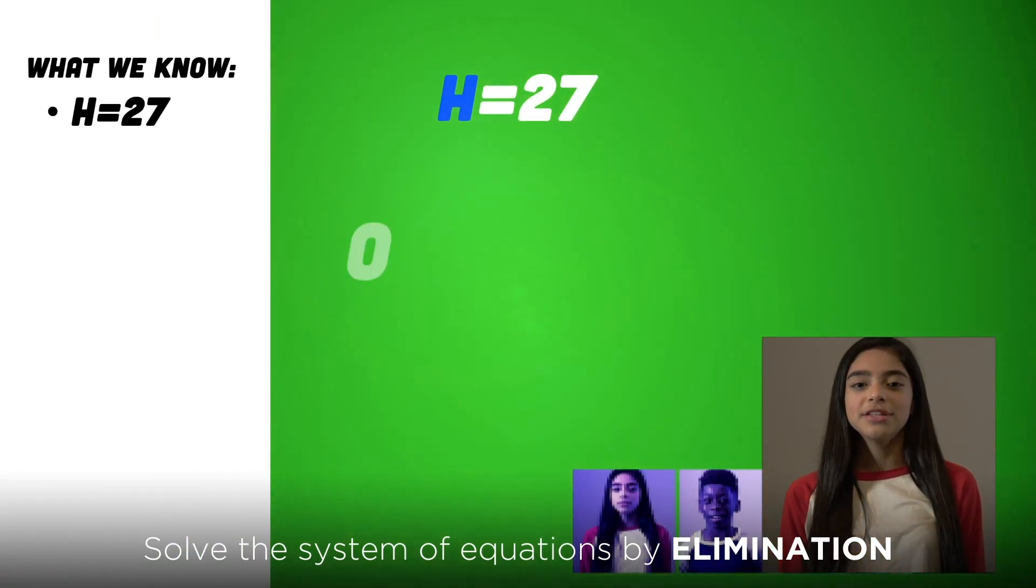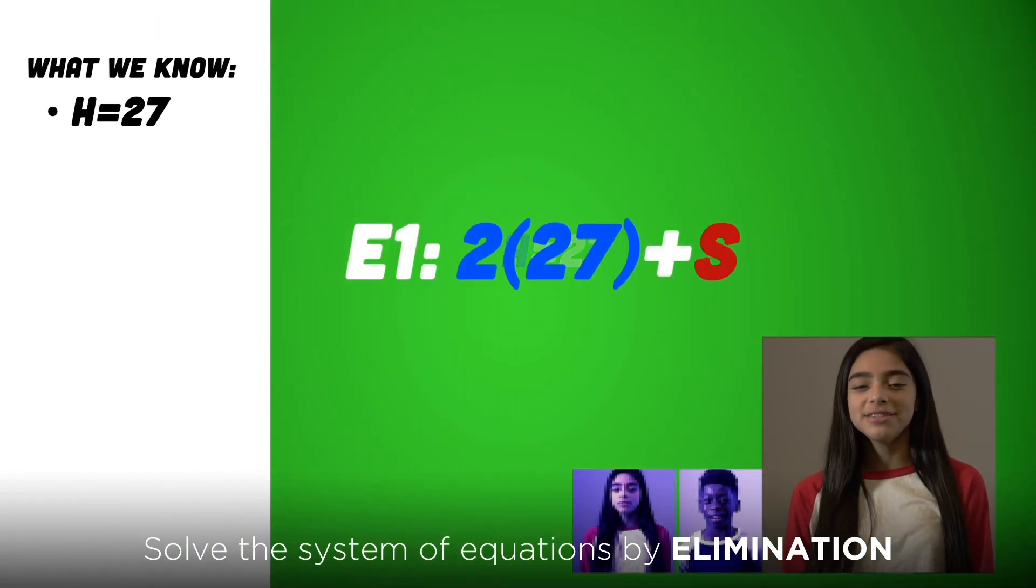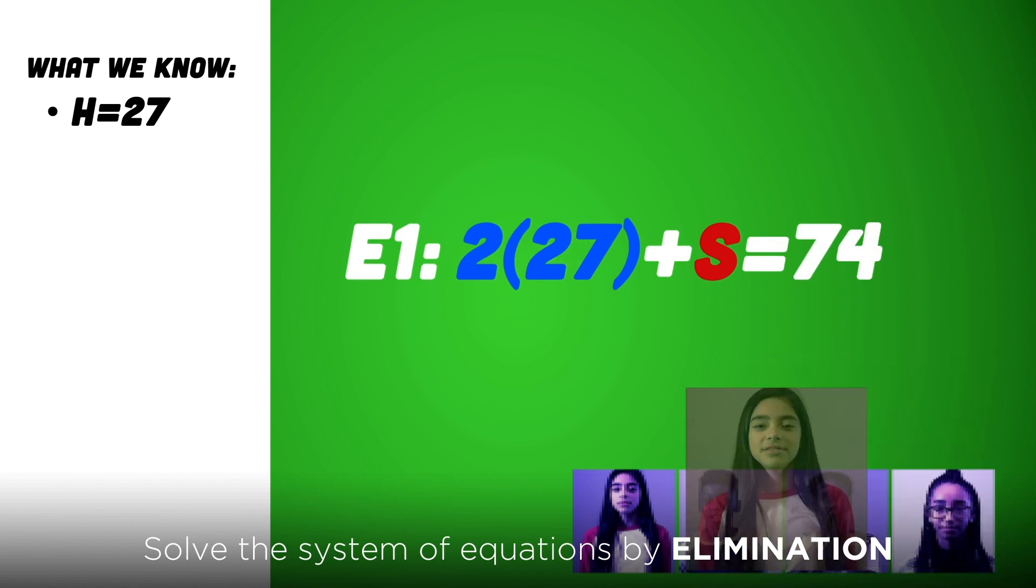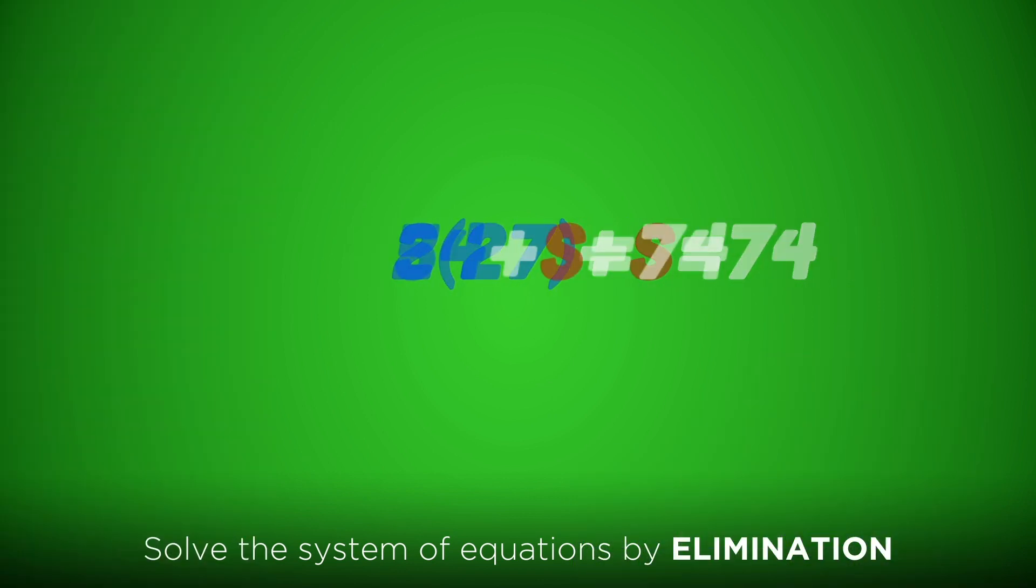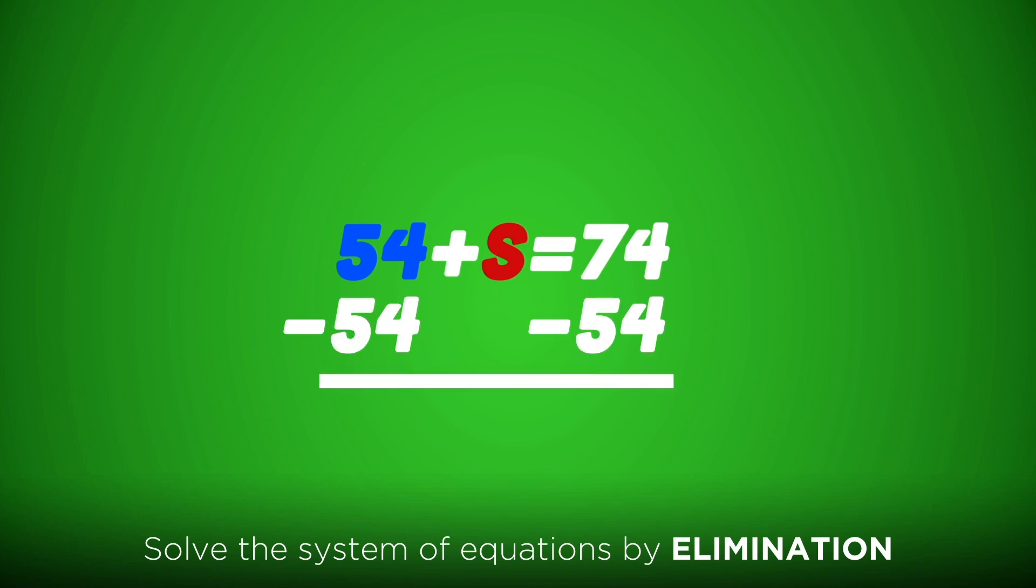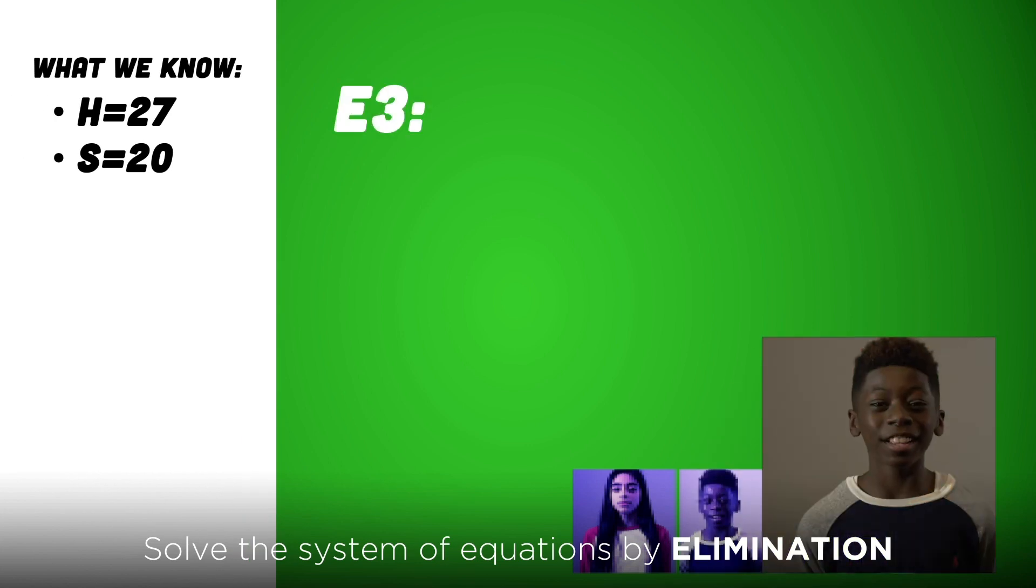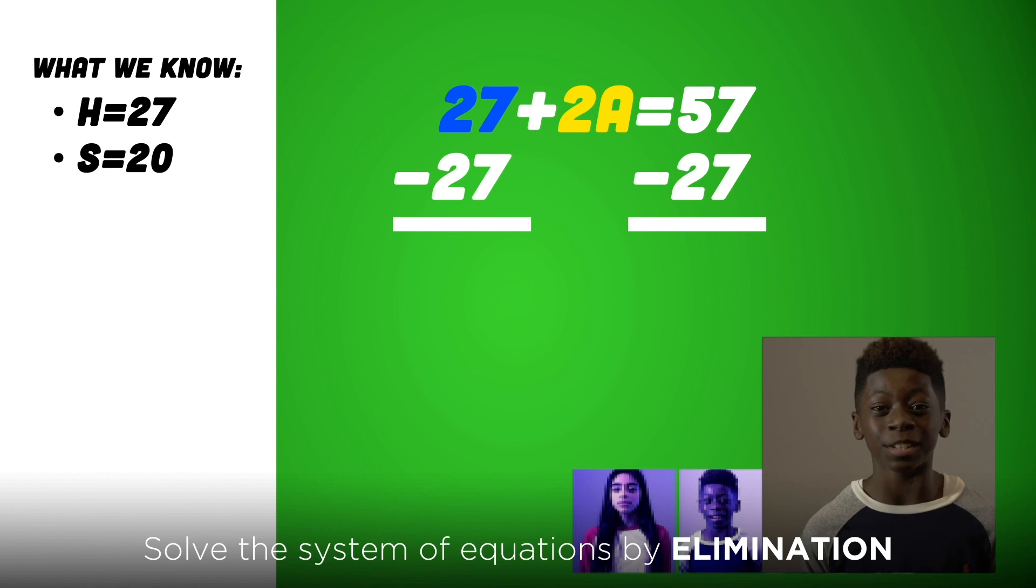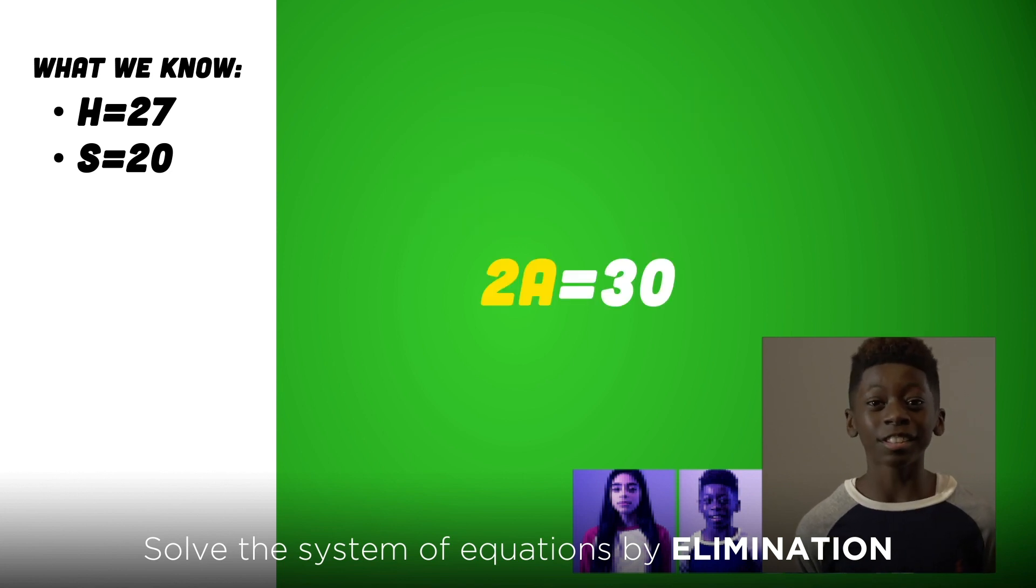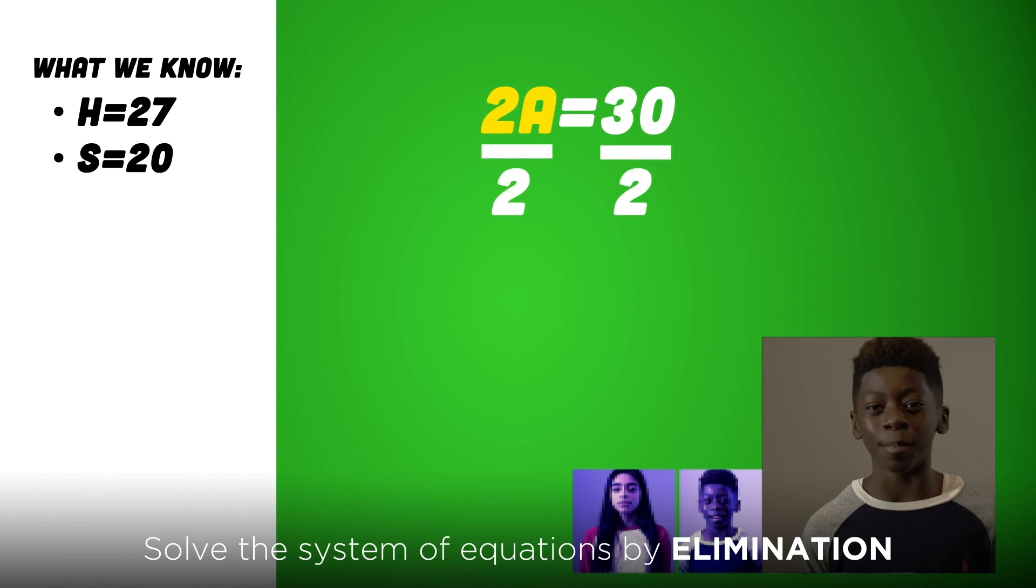We can plug that into our original equation. Two times 27 plus S equals 74. 54 plus S equals 74. You would subtract 54 from both sides, leaving you with S = 20. Now we look at 27 + 2A = 57. We would then subtract 27 from both sides, which is the subtraction property of equality, giving us 2A = 30. The last step is to divide two by both sides.